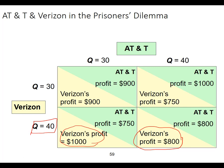Now let's look at AT&T's choices. If Verizon sticks to the deal, what's better for AT&T — $900 or $1,000? $1,000, which means cheating on the cartel. If Verizon cheats, AT&T could stick with the deal or cheat — cheating is better. So here's our Nash equilibrium, which also turns out to be our dominant strategy equilibrium. It's named after John Nash, an economist and mathematician — A Beautiful Mind is loosely based on him. This is a prisoner's dilemma even though we're not talking about jail, because this is the best outcome for both companies, but they'll end up away from it.